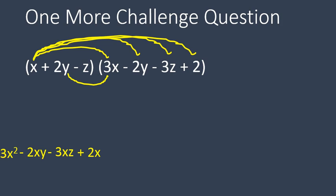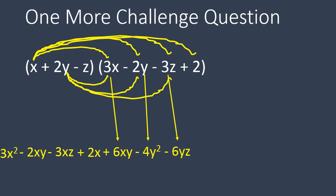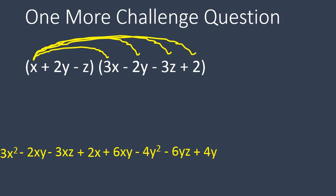Here we go. 2y times 3x will give us positive 6xy. 2y times -2y gives me -4y². 2y times -3z gives us -6yz. And finally, 2y times 2 gives us 4y. So, to clean things up, I really have to get rid of everything down there so that I can work on my third term.